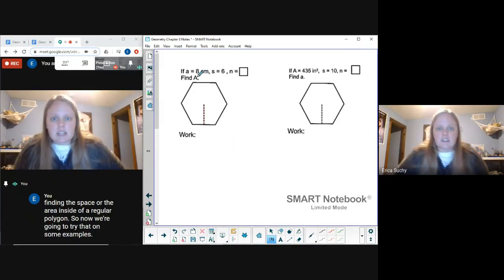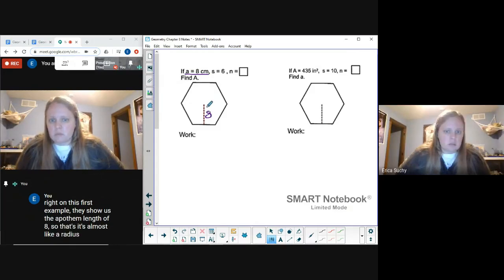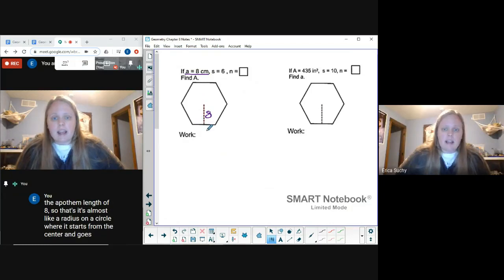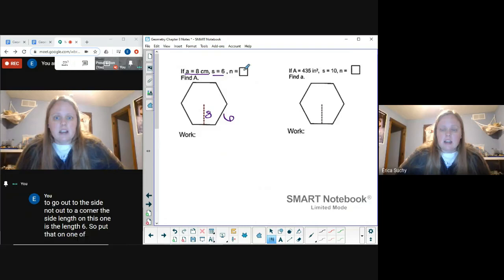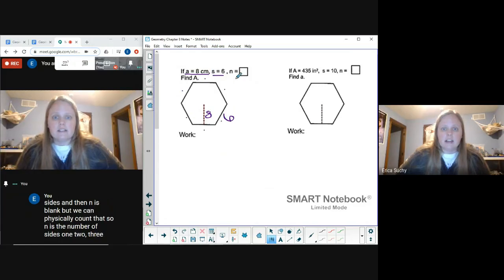All right, on this first example they show us the apothem length of 8. It's almost like a radius on a circle where it starts from the center and goes out, but it has to go out to the side, not out to the corner. The side length on this one is length 6. And then n is blank, but we can physically count that. So n is the number of sides: one, two, three, four, five, six.